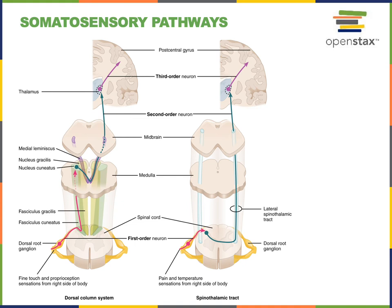The first order neuron in the dorsal column system enters the dorsal root into the spinal cord, and then the axon continues up the spinal cord as an ascending tract located on the dorsal side of the spinal cord. This ascending tract is known as the dorsal white column or posterior white column. The first order neuron travels all the way up the spinal cord to reach the second order neuron in a region of the brain stem known as the medulla oblongata. Then the second order neuron crosses the midline in the medulla oblongata and projects to the third order neuron in the thalamus.